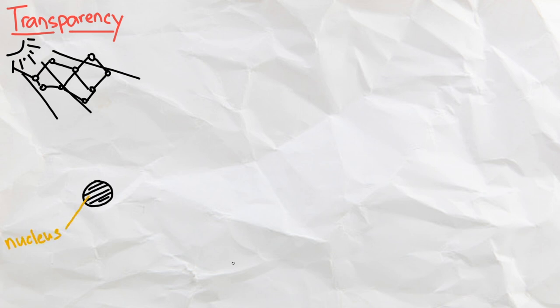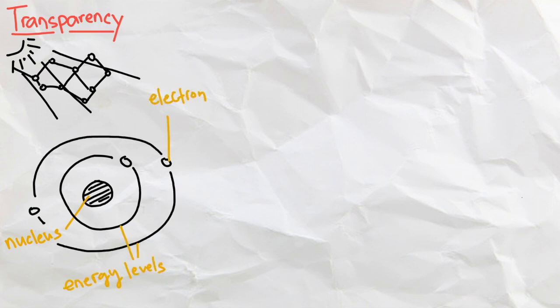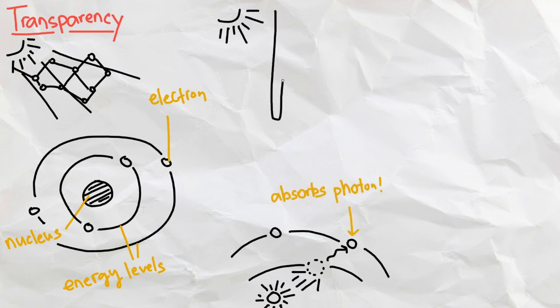Every atom has electrons orbiting its nucleus, and instead of orbiting in a neat line, the electrons orbit at different energy levels. When these electrons are hit by light, or photons, they will jump to the next energy level, absorbing a photon in the process. This is why most objects are not transparent, since their electrons prevent the light from passing through the atoms.